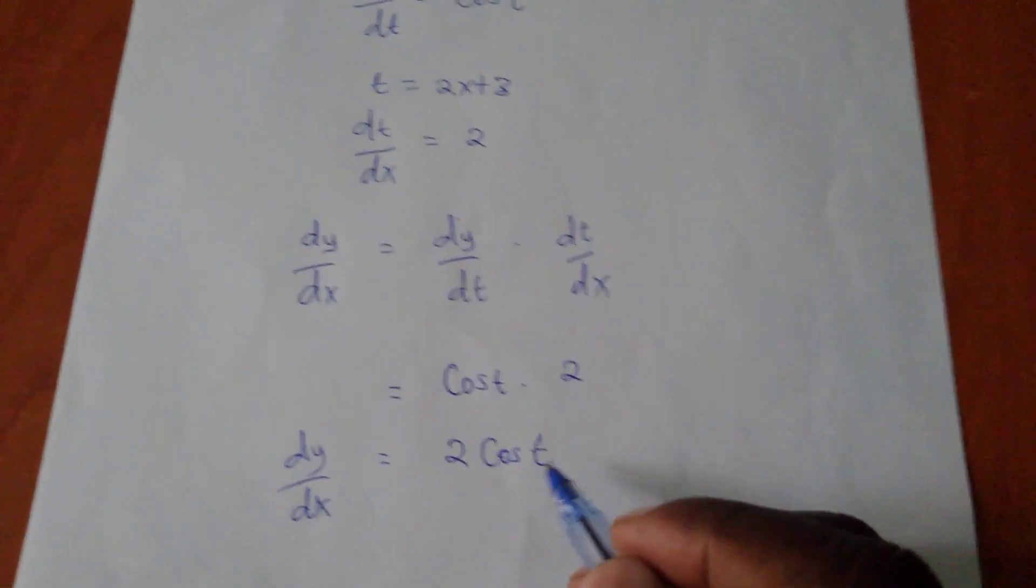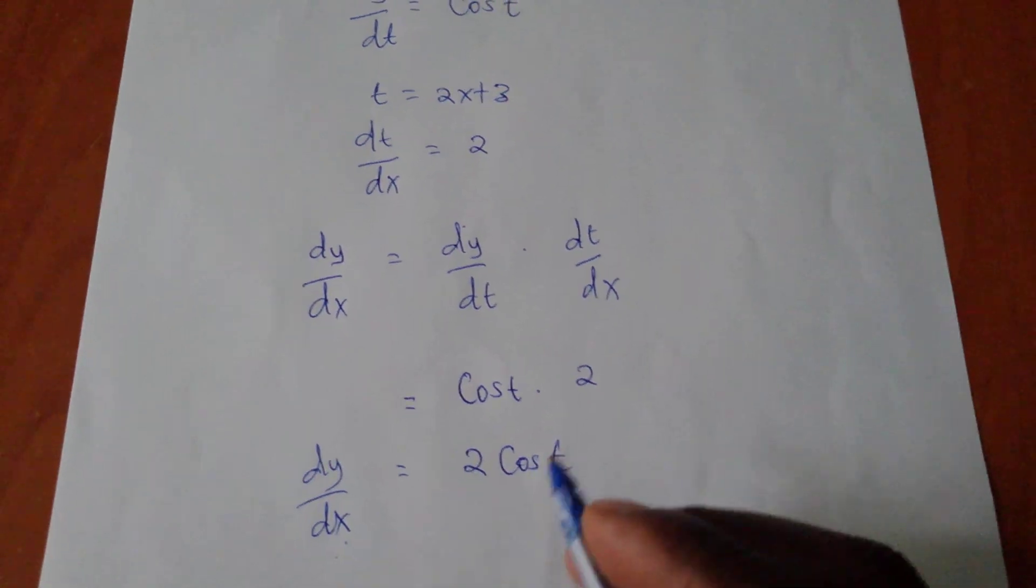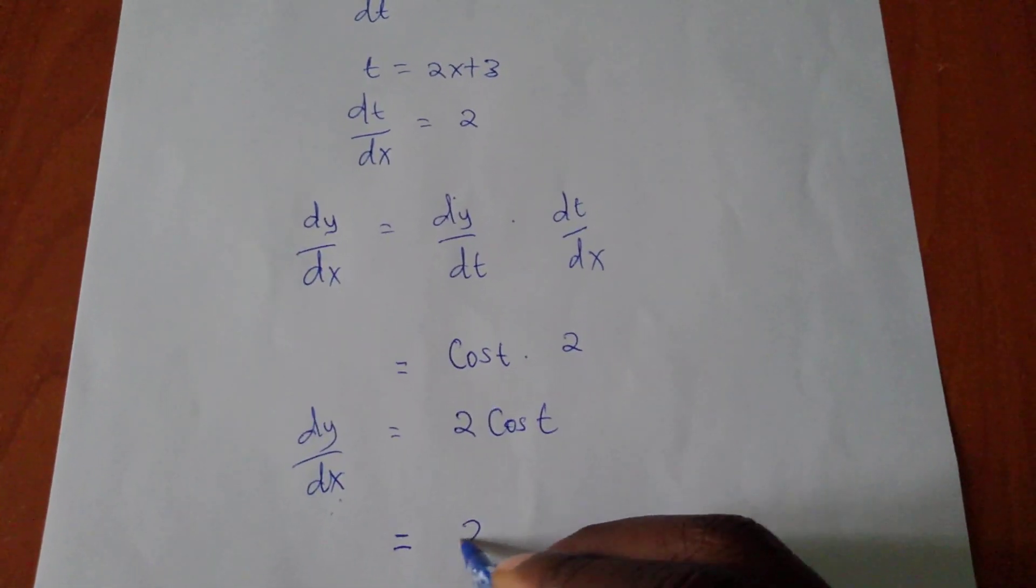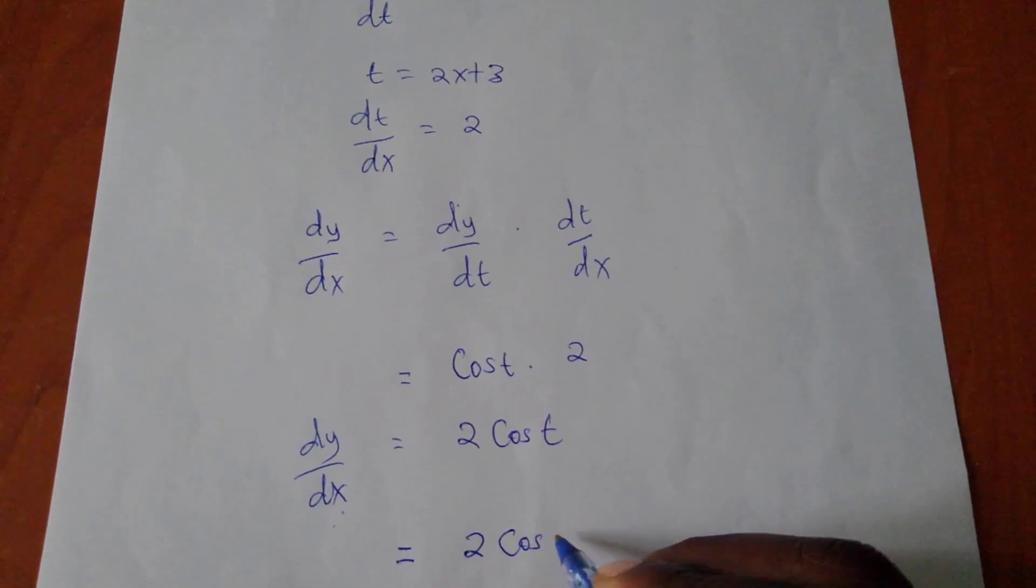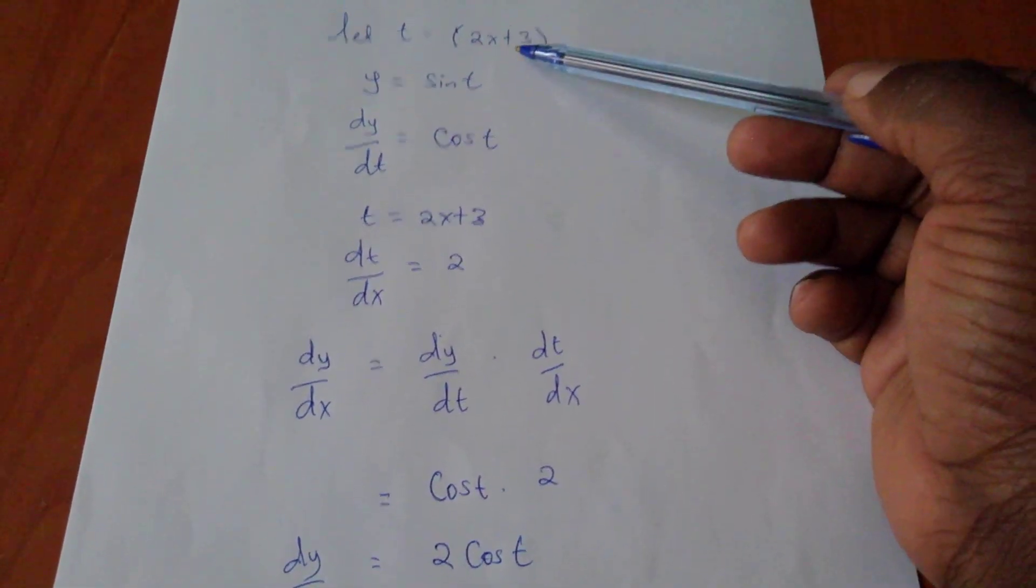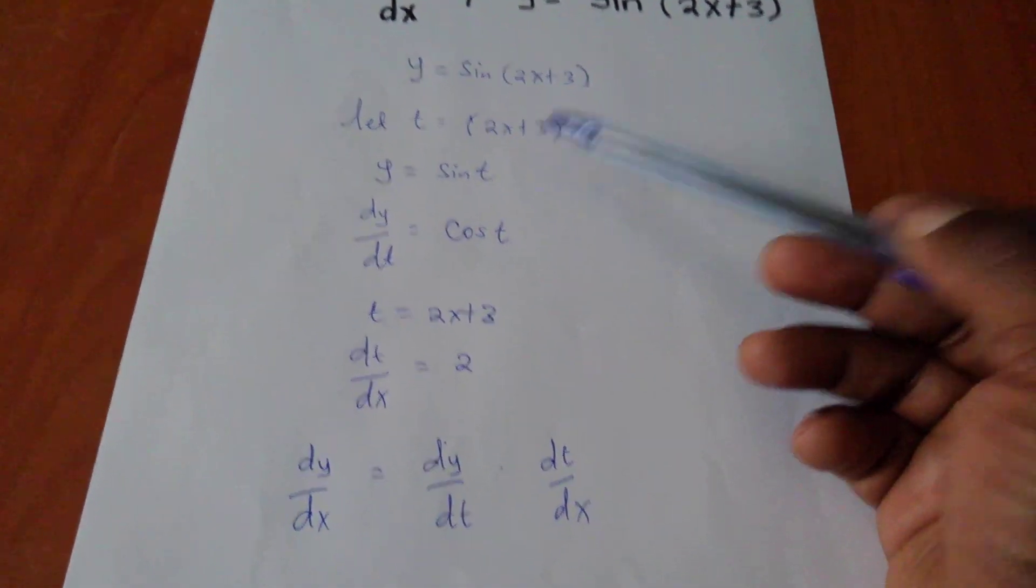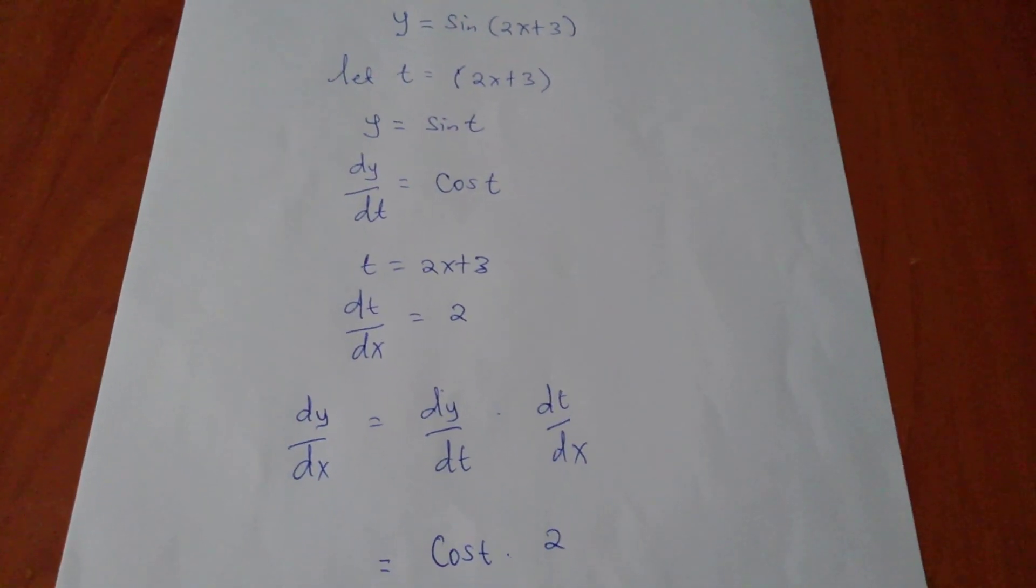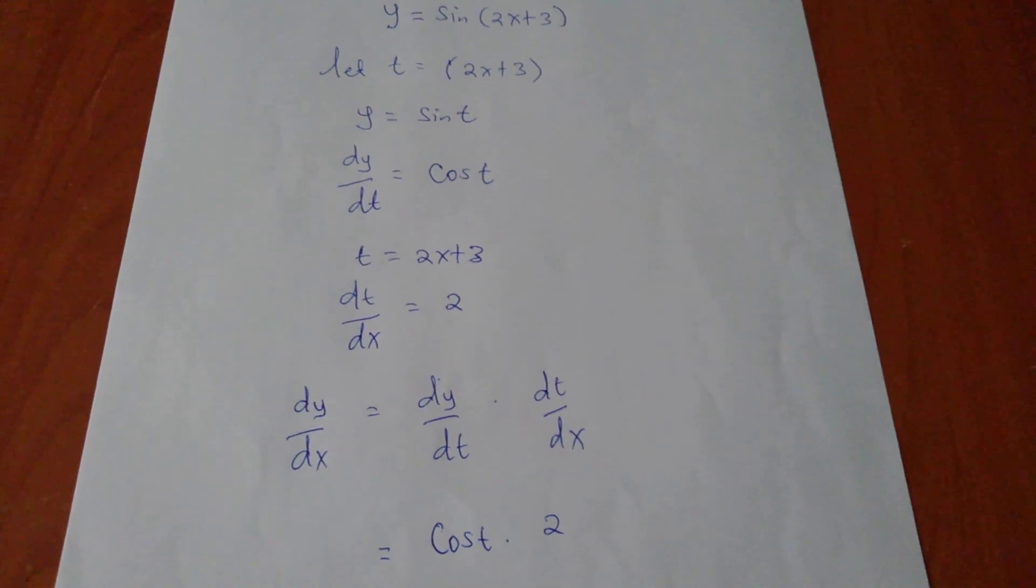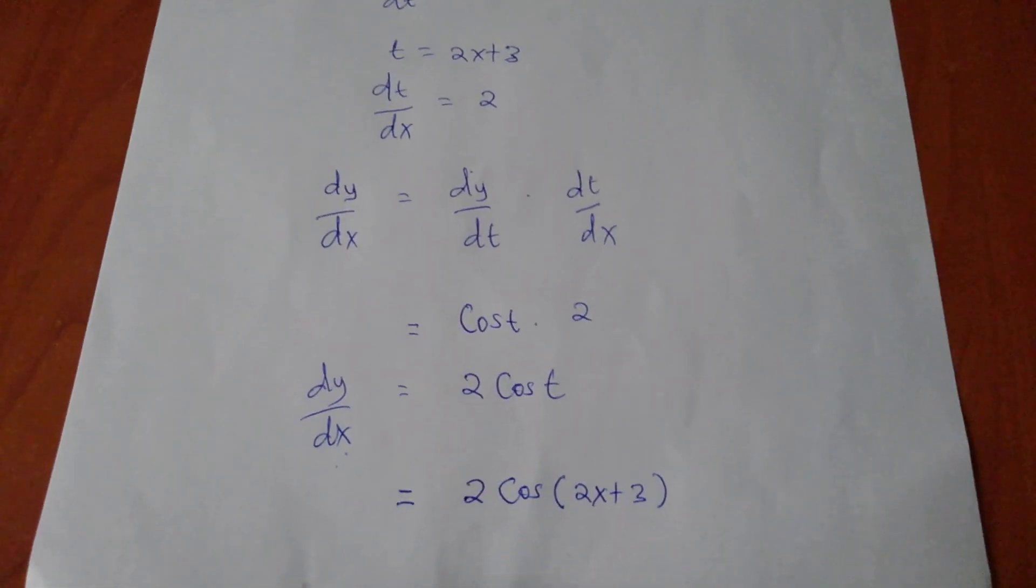So my final answer will be 2 cos, then I'll bring this t, which is in form of x, which is 2x plus 3.